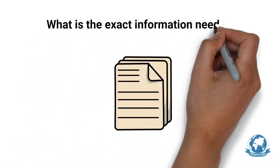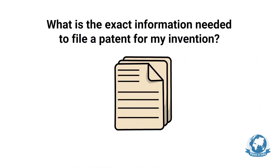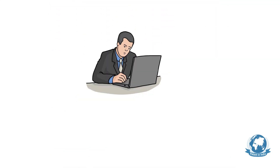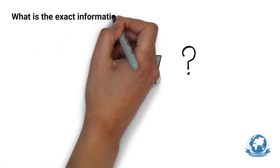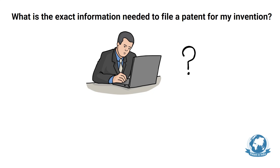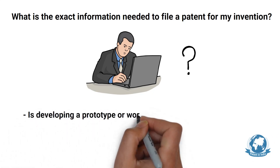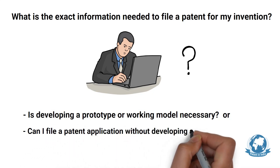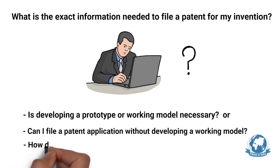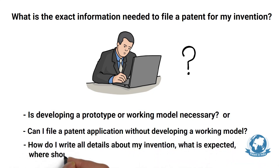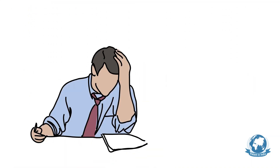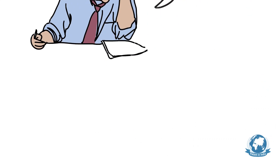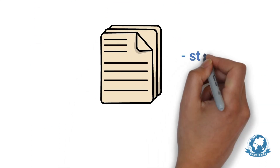What is the exact information needed to file a patent for your invention — in other words, how to create an invention disclosure? When you decide to file a patent application, the very next question is: what exact information is needed? You may have further questions like: is developing a prototype or working model necessary, or can I file without one? How do I write all the details? It may be challenging and intimidating to look at a blank paper and think where to start.